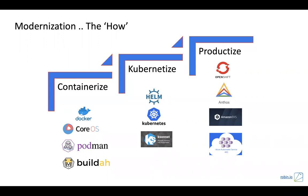The biggest challenge amongst all three is productizing that application. So you have a Docker image, you have a Helm chart. But when we run this Helm chart on a Kubernetes platform — whether on-prem, OpenShift, or cloud — is that production-ready? Can it meet SLAs in terms of availability and performance? That is a big question to ask.